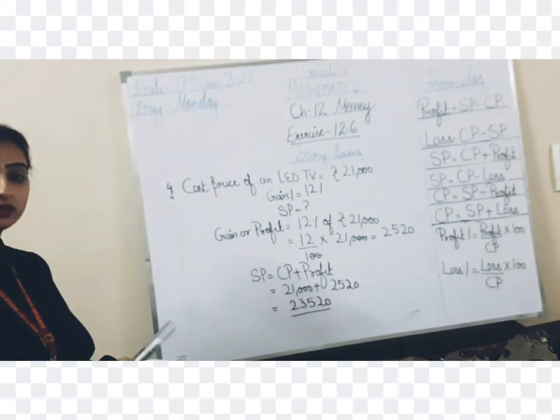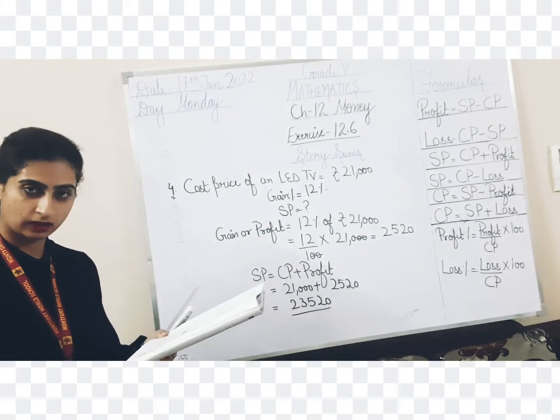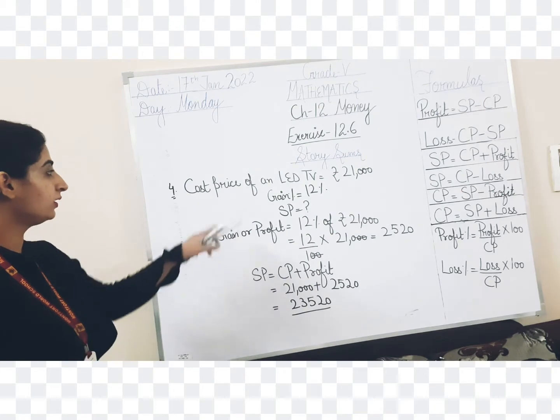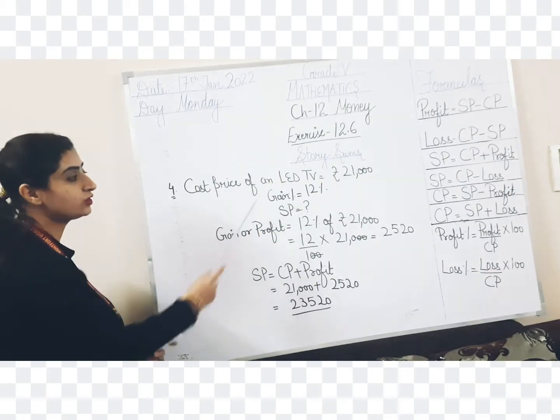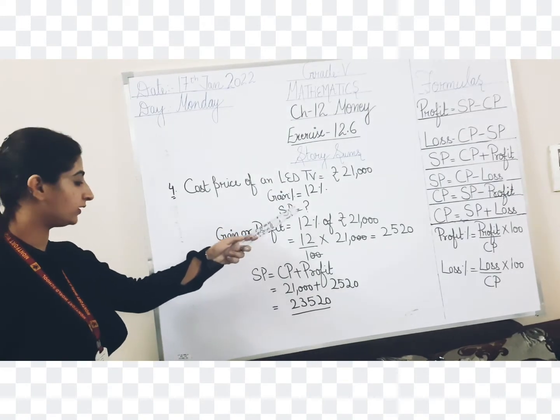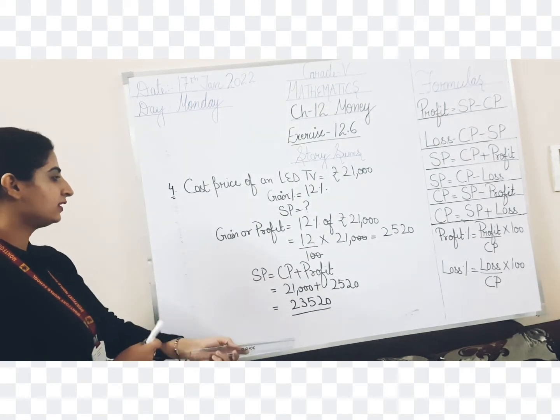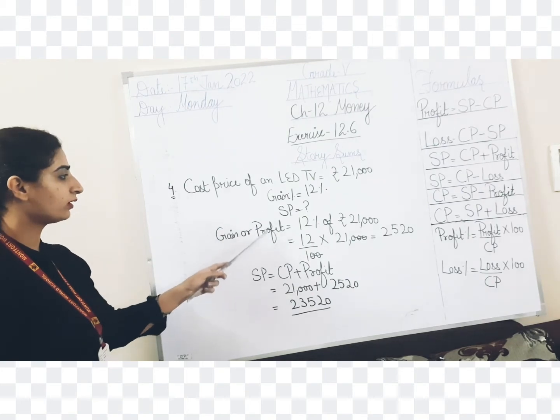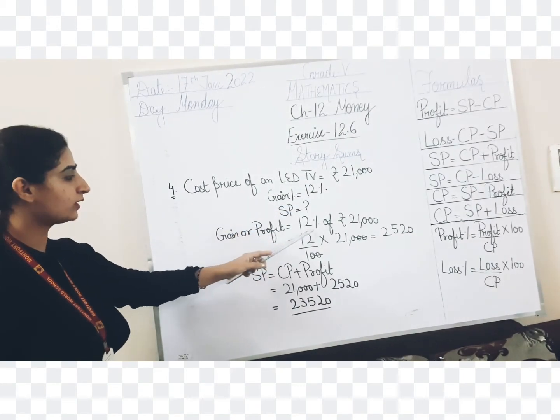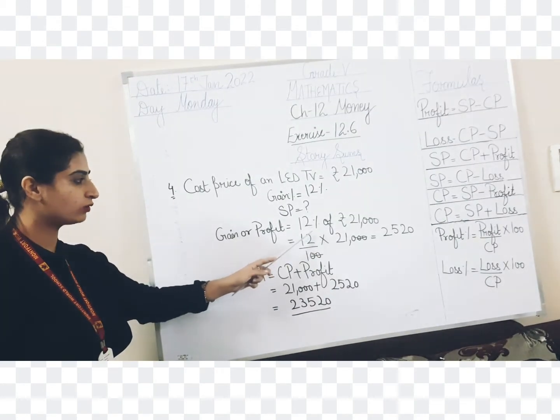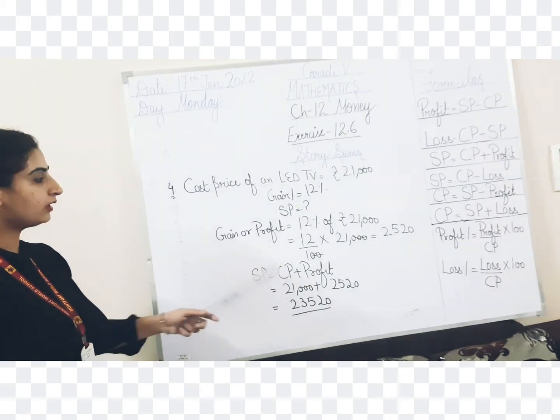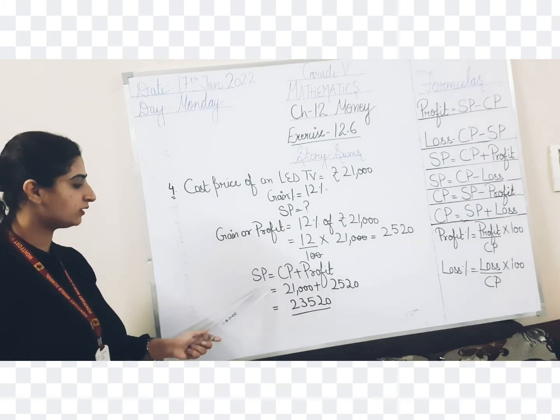Next question is a different type of question. The cost of an LED TV is rupees 21,000 and at what price should the shopkeeper sell the LED TV so as to gain 12 percent? Now in this question what is given? Cost price of an LED TV is given rupees 21,000 and gain percent is already given. In the previous questions we calculated gain percent or profit percent, loss percent. In this it is already given. So what needs to be calculated? Selling price. Now what is gain or profit? So profit is actually a percentage on cost price. So that means it is 12 percent of 21,000. Off means multiply. When we calculate percent means divided by 100, so 12 upon 100 multiply 21,000. That comes out to be 2520. Now we got profit. Put it in the formula. Selling price is cost price plus...